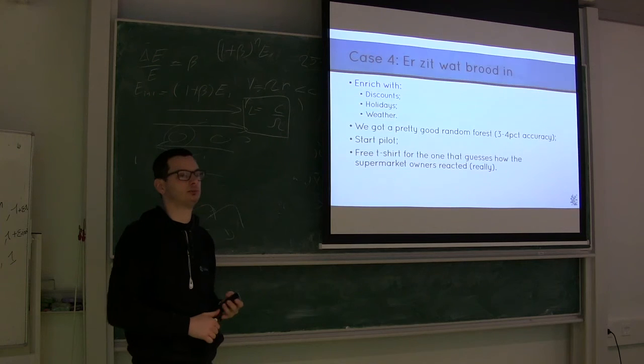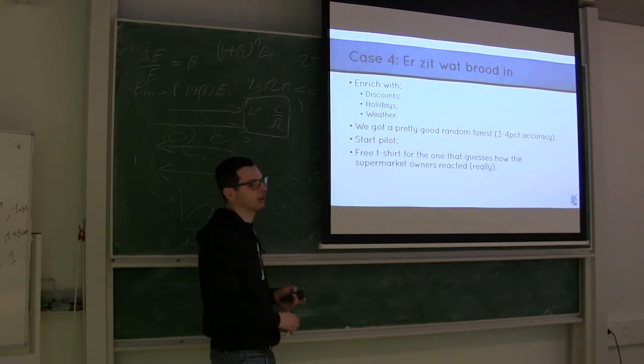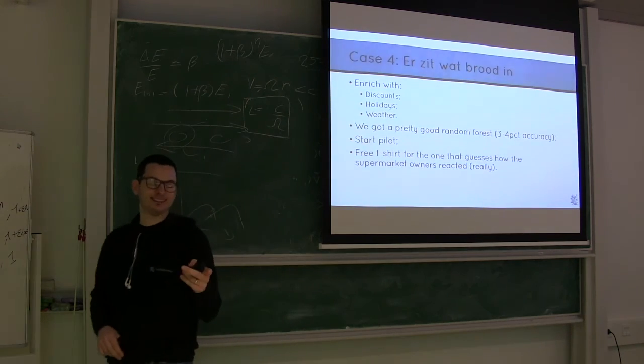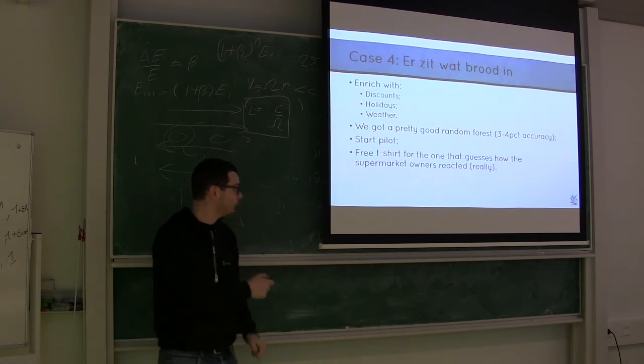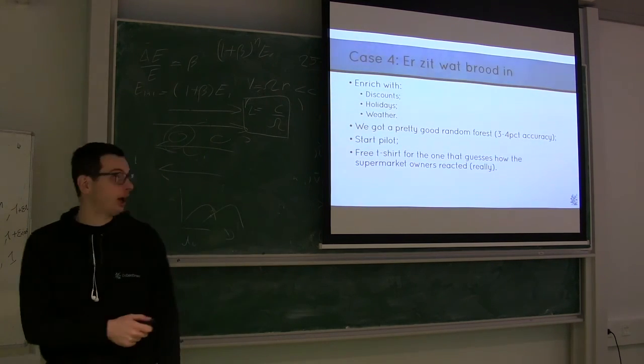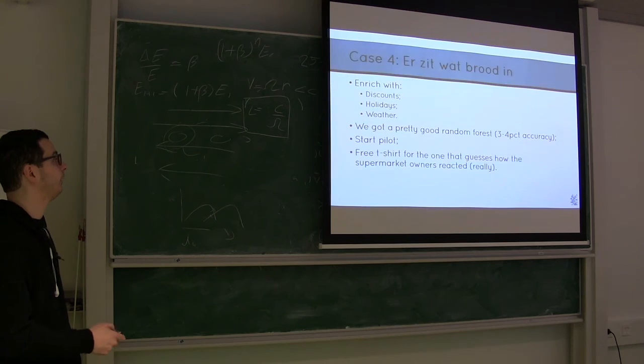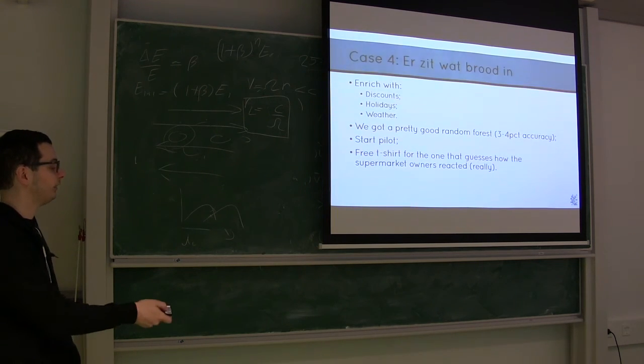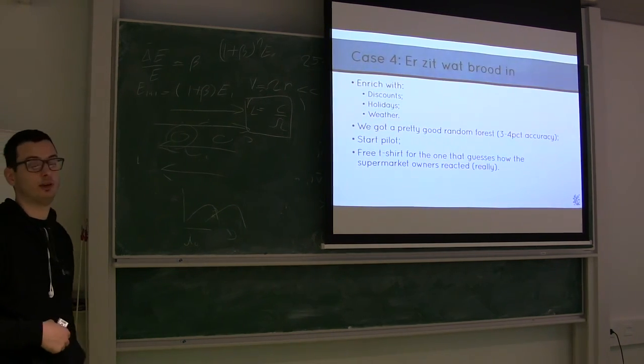Who's not Dutch here? Yeah, discounts is just the most important things that drives what Dutch are buying. So like we have holidays, we have weather that influences how much bread is sold, but discounts, it's lost like three times as much. So they don't care what kind of bread they like, they'll buy whatever is in discount. And Sordana is laughing here, but I got the data that backs my claim. So what we did, we trained a random forest with three, four percent accuracy, so basically we could say tomorrow how much bread will be sold with four percent accuracy. We started the pilot, and I got a free t-shirt for the PyData conference that takes place tomorrow for the one that guesses correctly how the supermarket owners reacted to the recommendation that the model did.